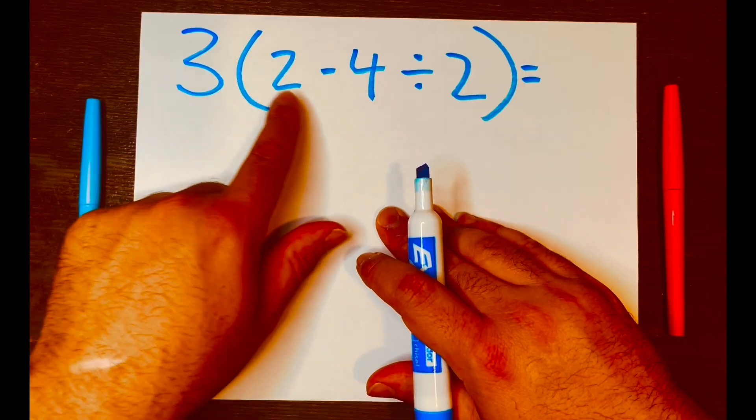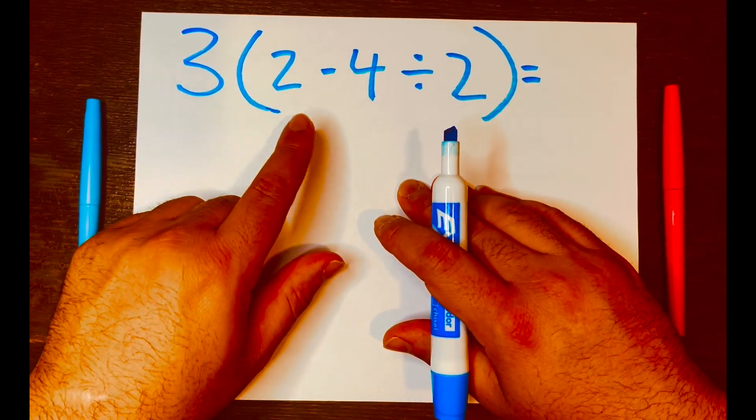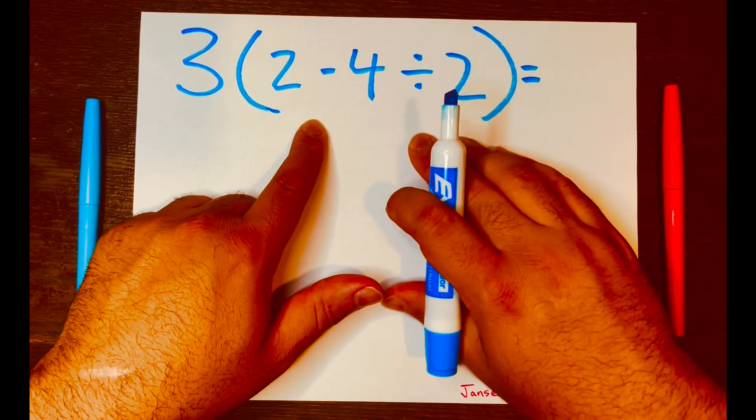Some people will start with three times two, and that is incorrect because according to PEMDAS, you start with parentheses first, or what's inside the parentheses first.